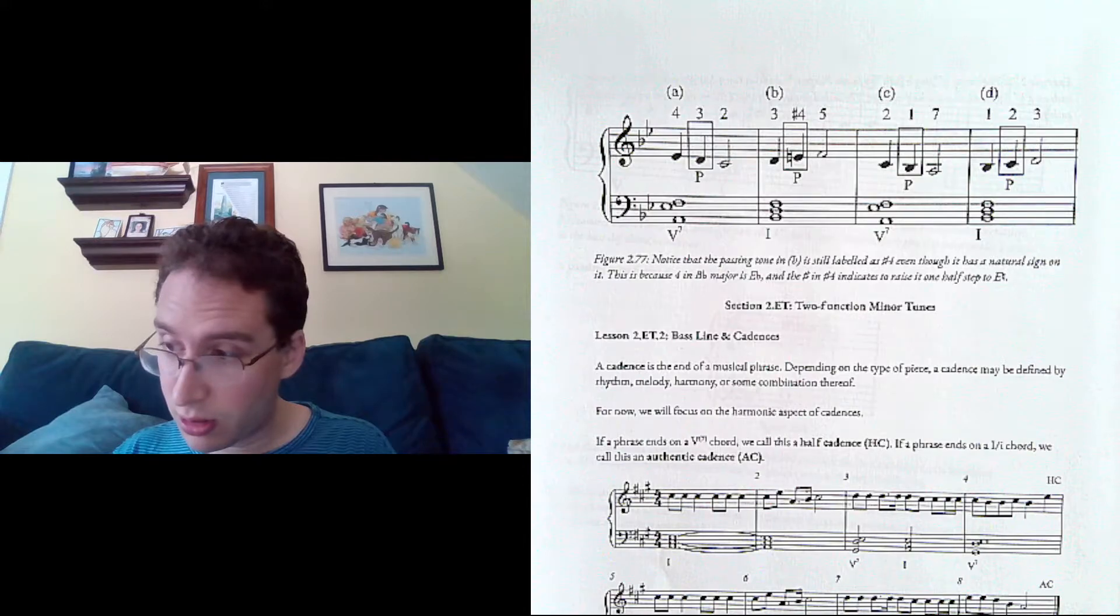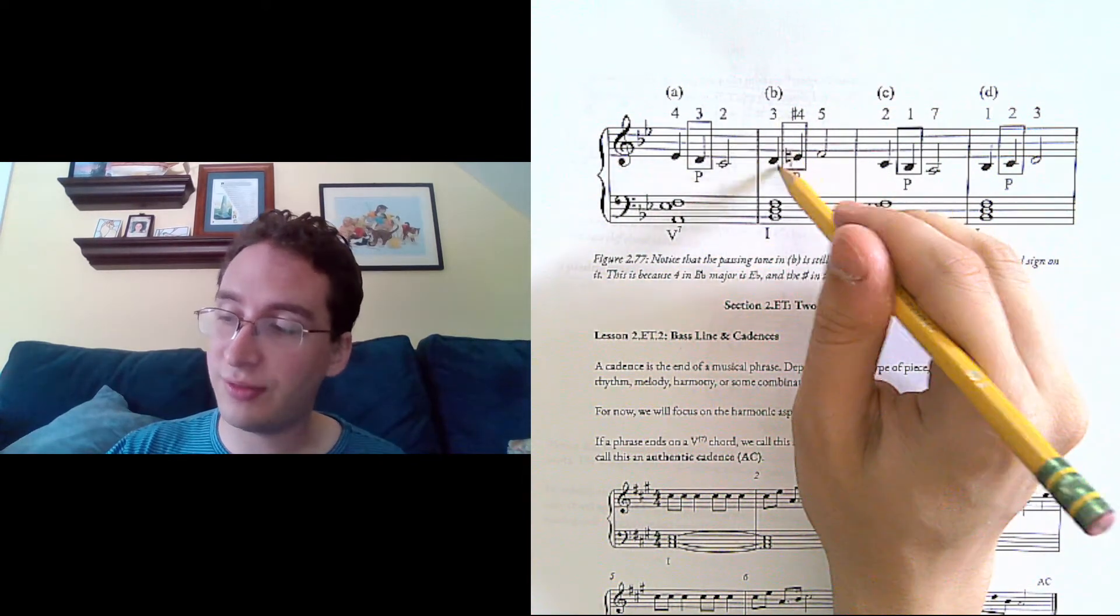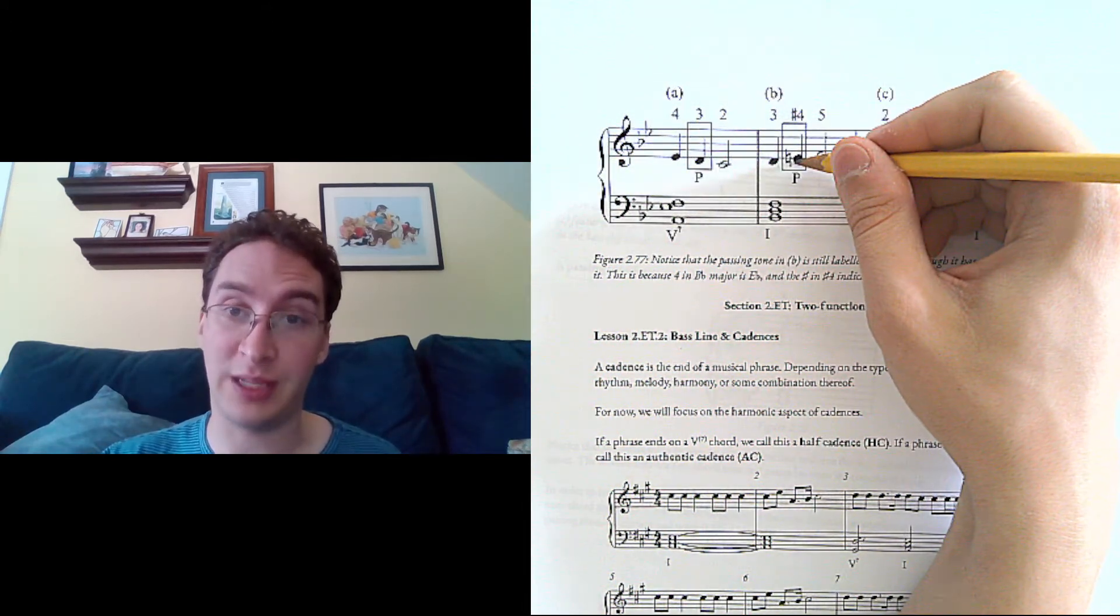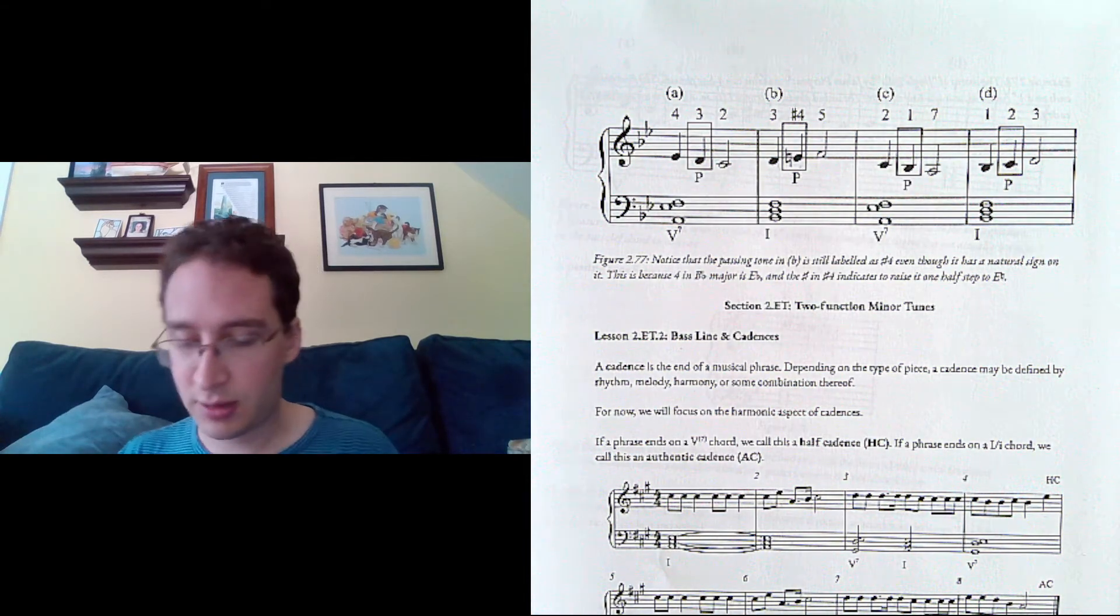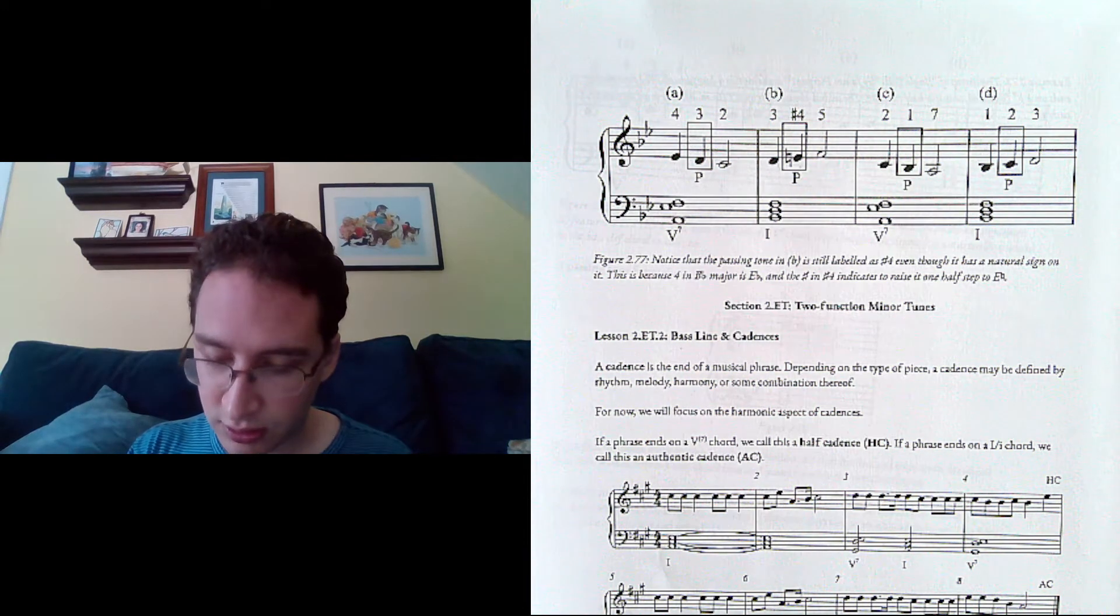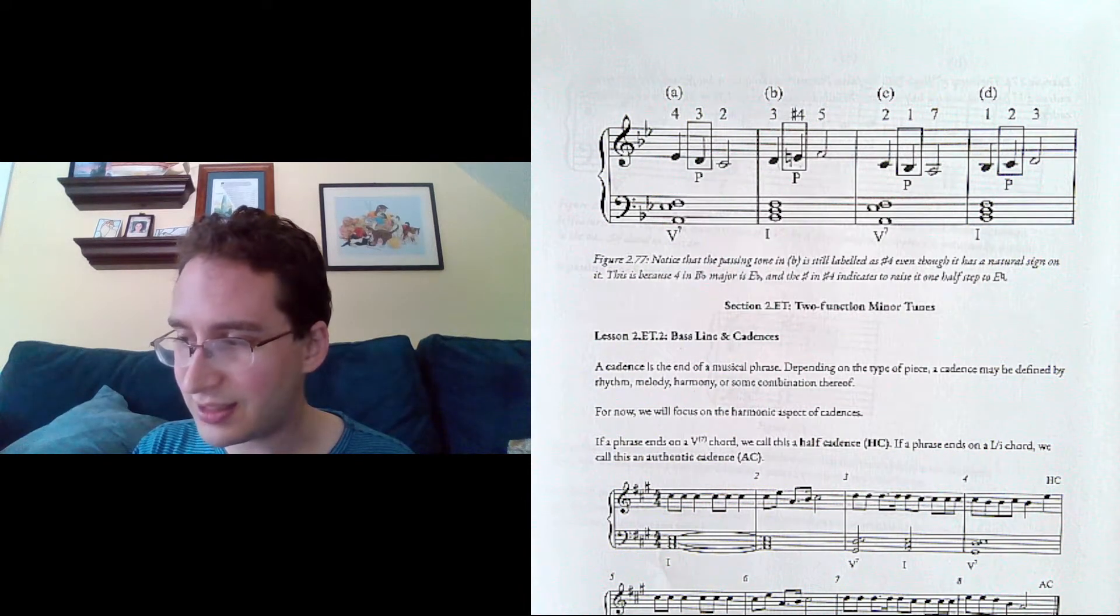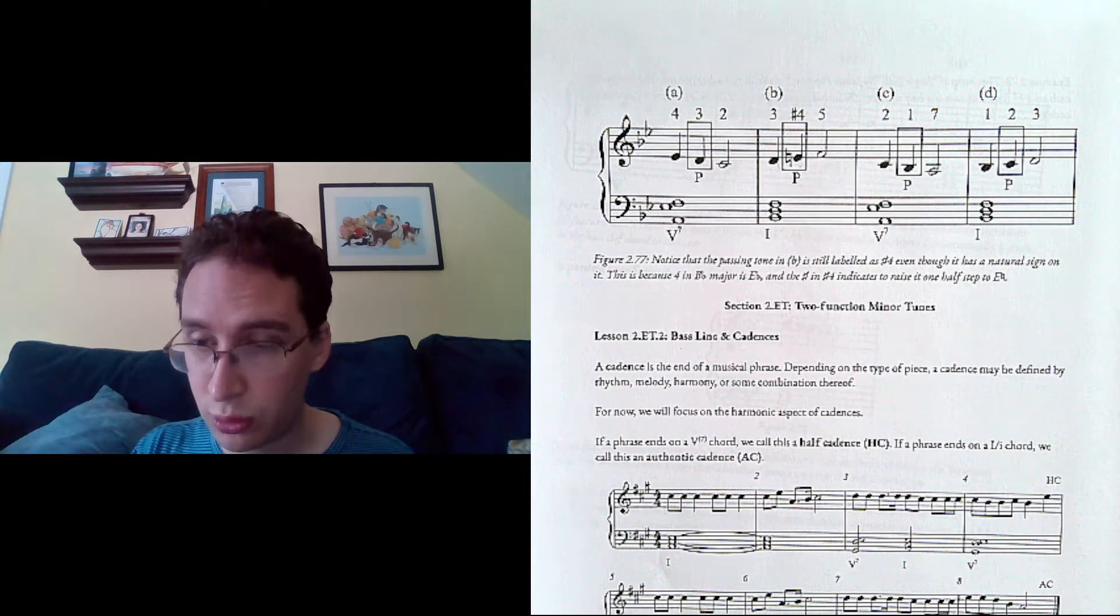3, 3, 4, 5. Note that we still call this sharp 4, even though it's a natural. The sharp just means we're raising it a half step from what it would normally be. It would normally be an E-flat if you raise it a half step to E-natural. Our 5-7 chord. 2, 2, 2, 1-7, 1-2-3.